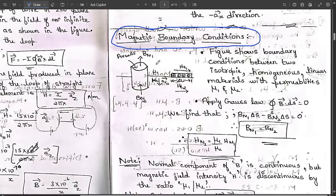Consider the figure showing a magnetic medium — a magnet with charges, magnetic field intensities Ht1 and Ht2 from upper and lower sides, differential length Δl, and permeabilities μ₁ and μ₂. The direction of propagation is given as â₁₂. The upper and lower surfaces each have area ΔS, with normal magnetic flux densities Bn1 and Bn2.